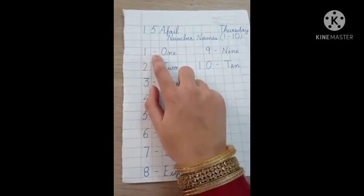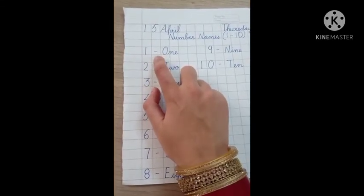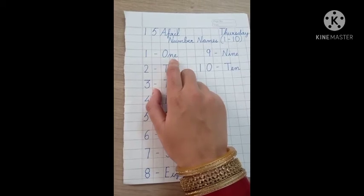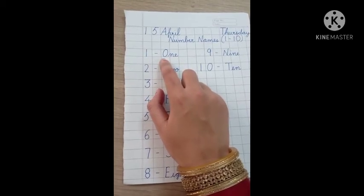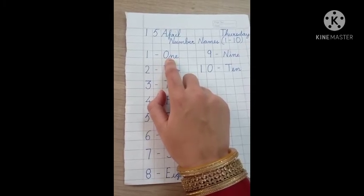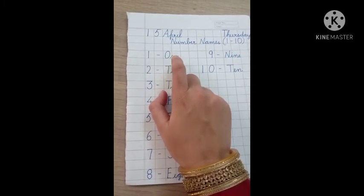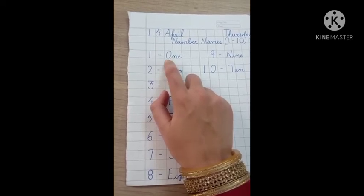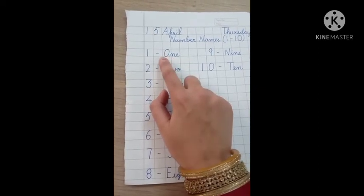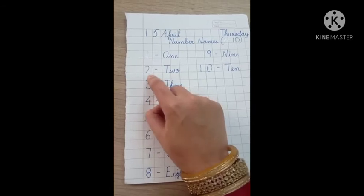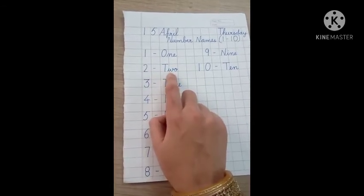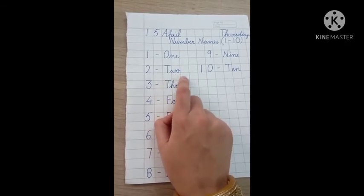Now, see. 1, dash should be in between. It is also called hyphen. 1-one. Hyphen 1-one. O should be capital, N small, E small. O aur N ke beech mein thoda sa gap hona chahiye. Because when we write capital and when we write with it, when we write cursive. Theek hai? O capital N E. O-N-E-1. Then write 2, hyphen, T capital, W small, O small. T, W, O, 2.